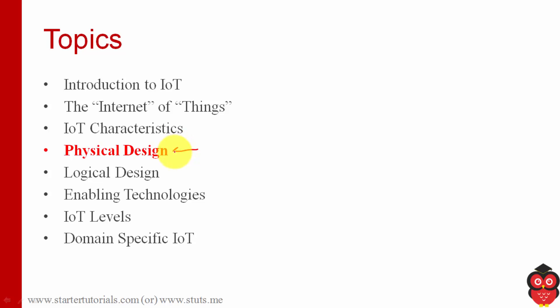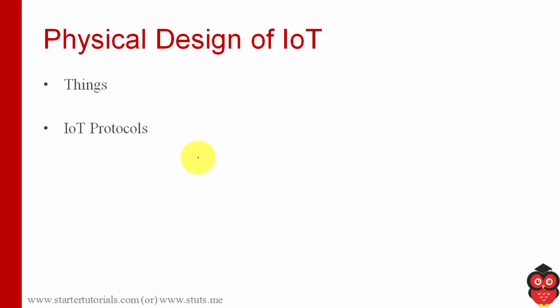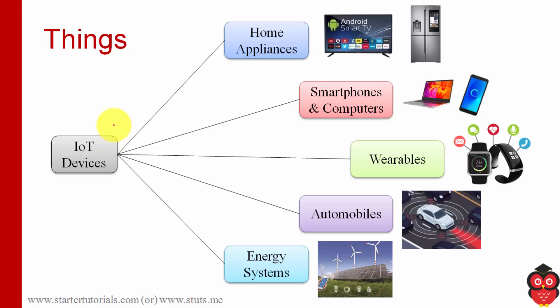Now we are going to enter into physical design of IoT, where we will be discussing things and IoT protocols. In this session we will talk about things, and in the next session we will look at protocols. Things means the IoT devices — you can consider a full-fledged IoT device or you can consider sensors, actuators, and all these things as things.